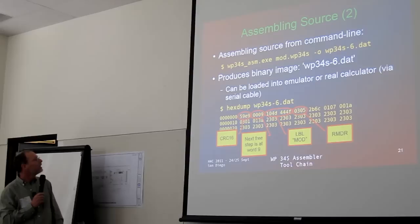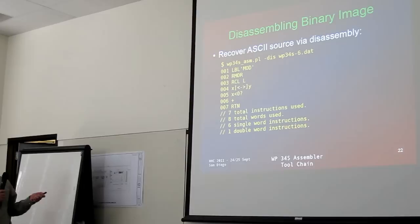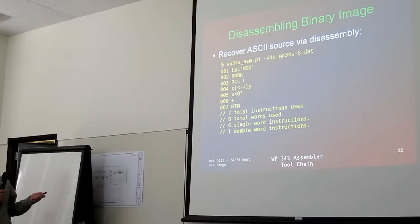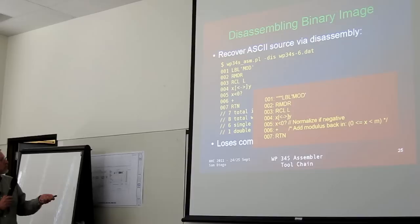Next, we can take that same binary image — there's a dash-DIS flag for disassembling. We take the image and pop out the original source code, unfortunately without the comments, and it gives you a little more information about what it did. You're losing the source code comments, but that was the original code we put in and this is what we recovered — probably enough that you can do something with it if you had to recreate it.